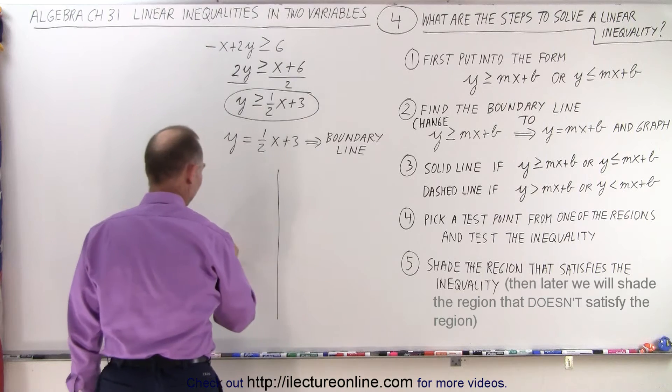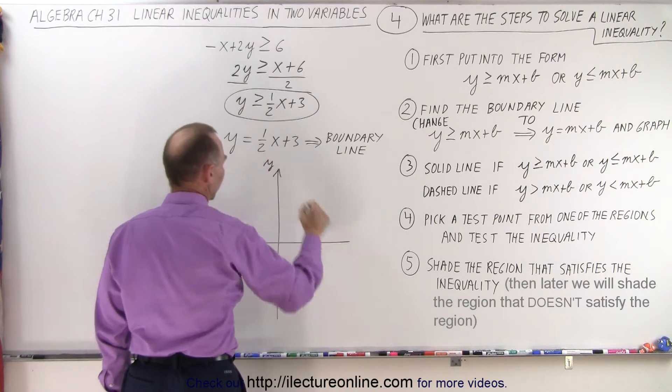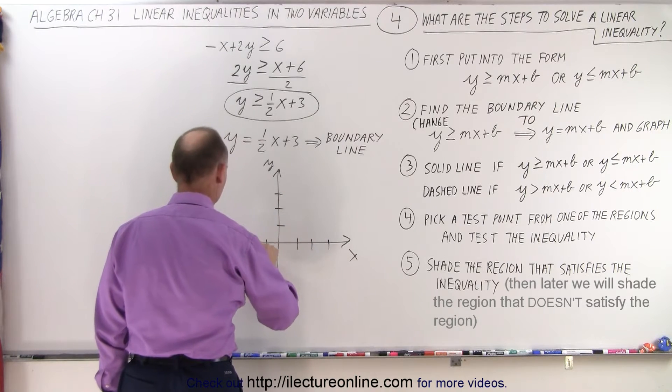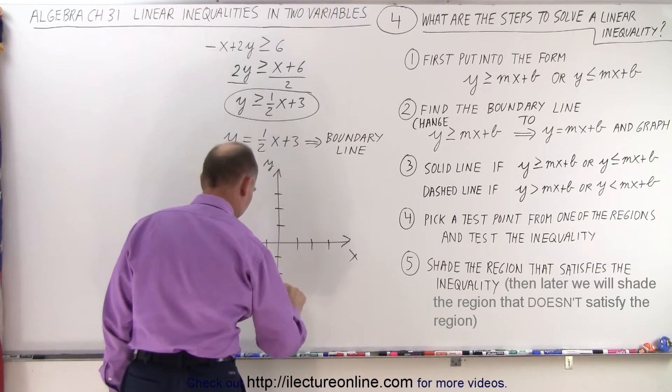So here's our graph. There's our y-axis, our x-axis, 1, 2, 3, 1, 2, 3, negative 1, negative 2, negative 3, negative 1, negative 2, negative 3.